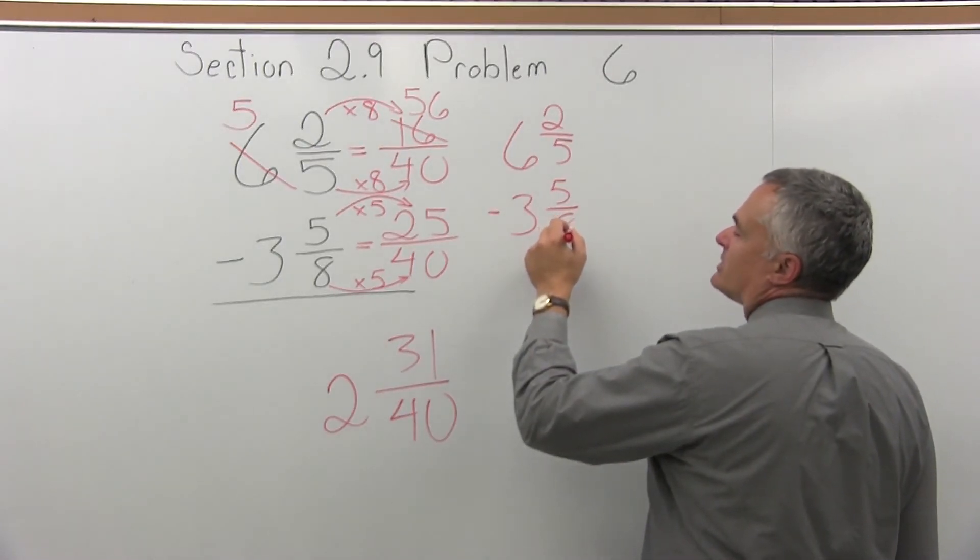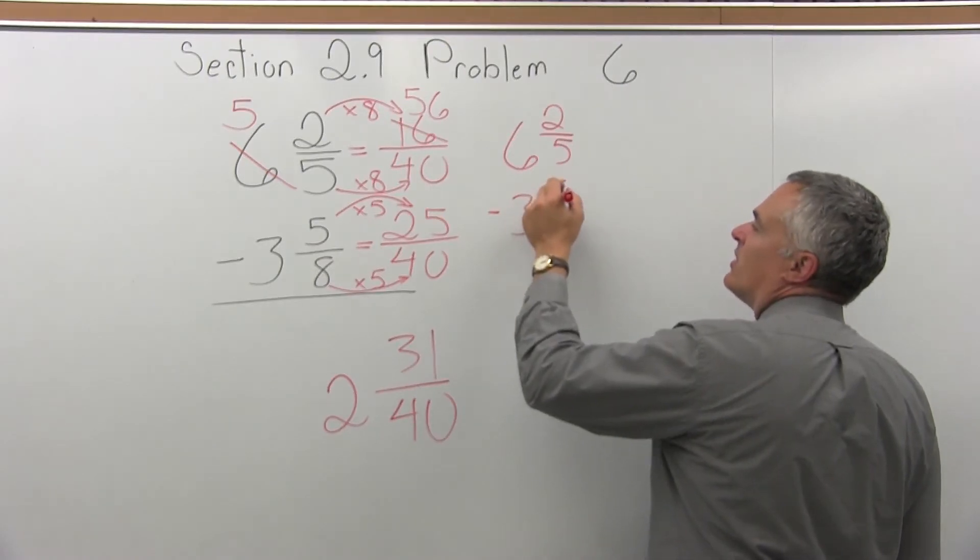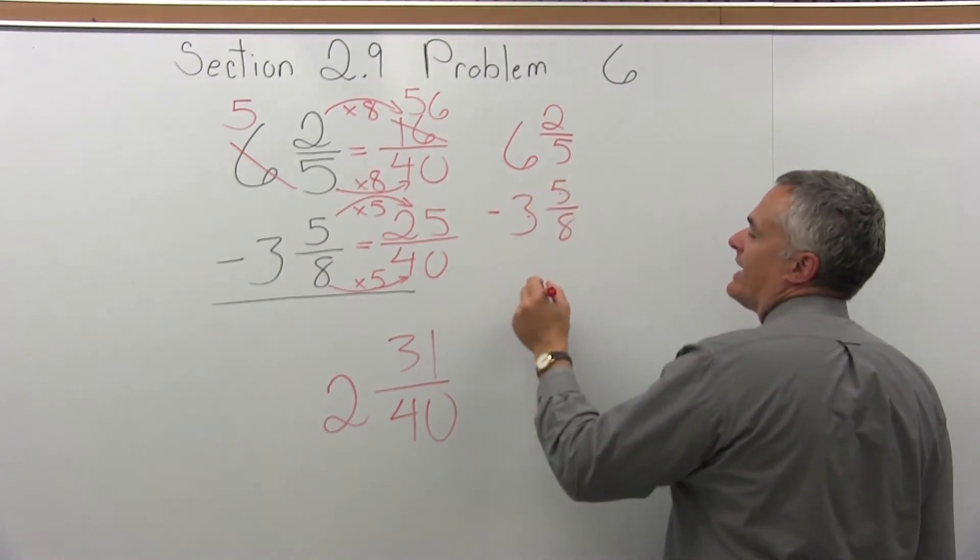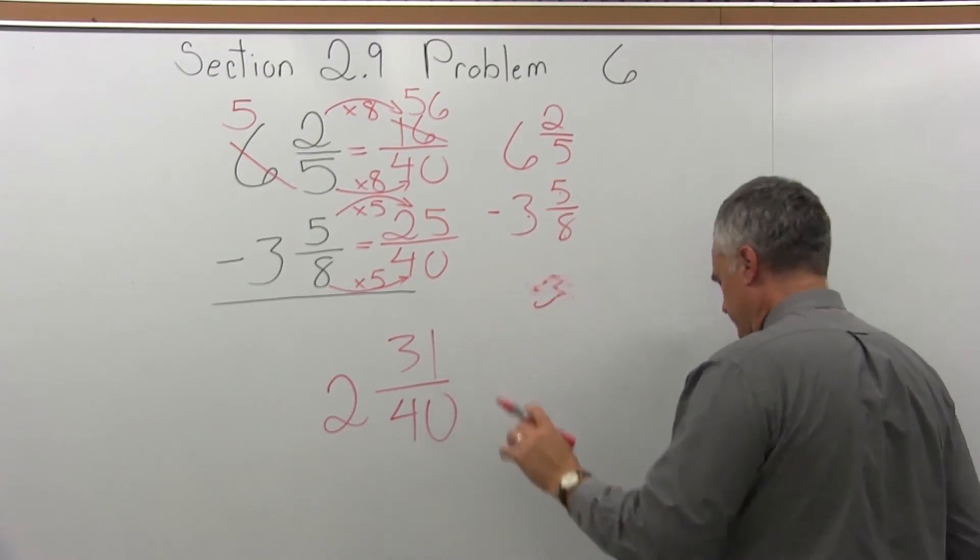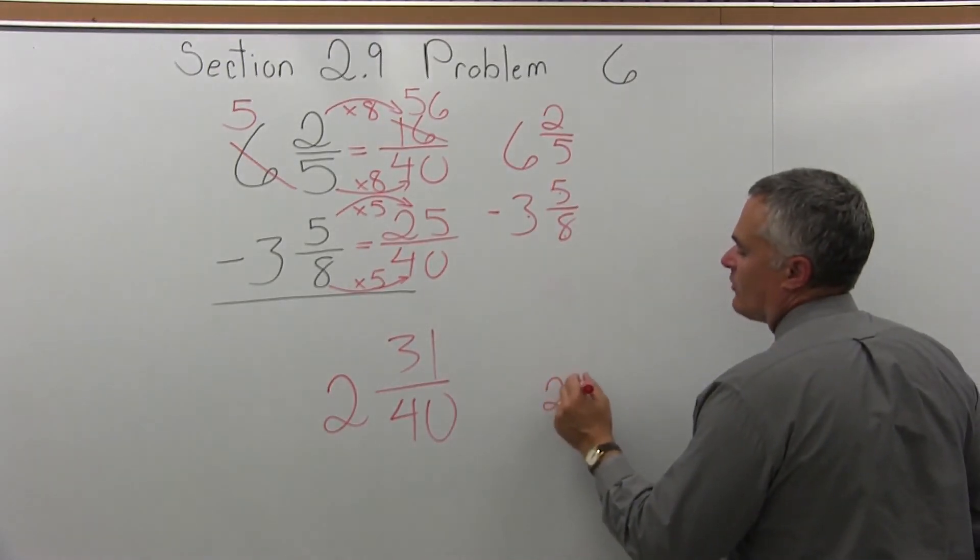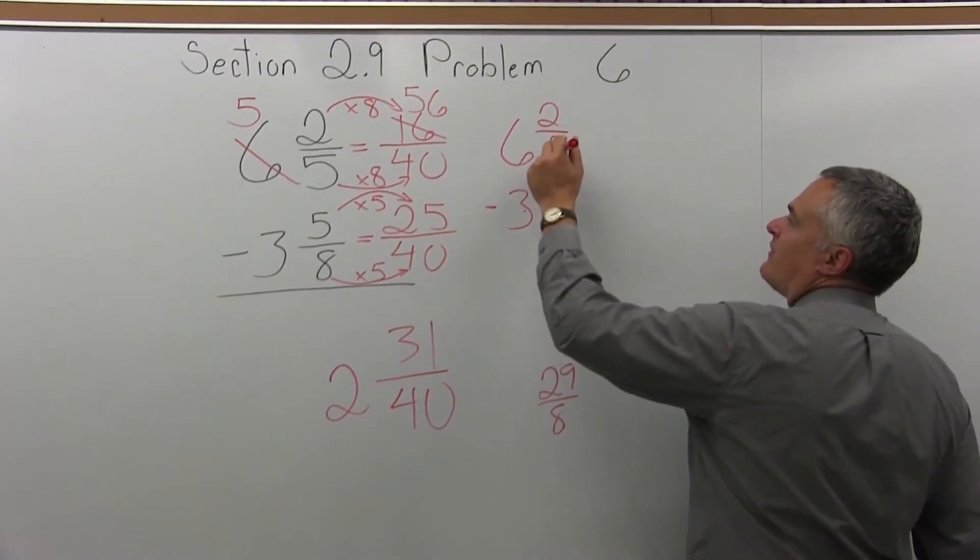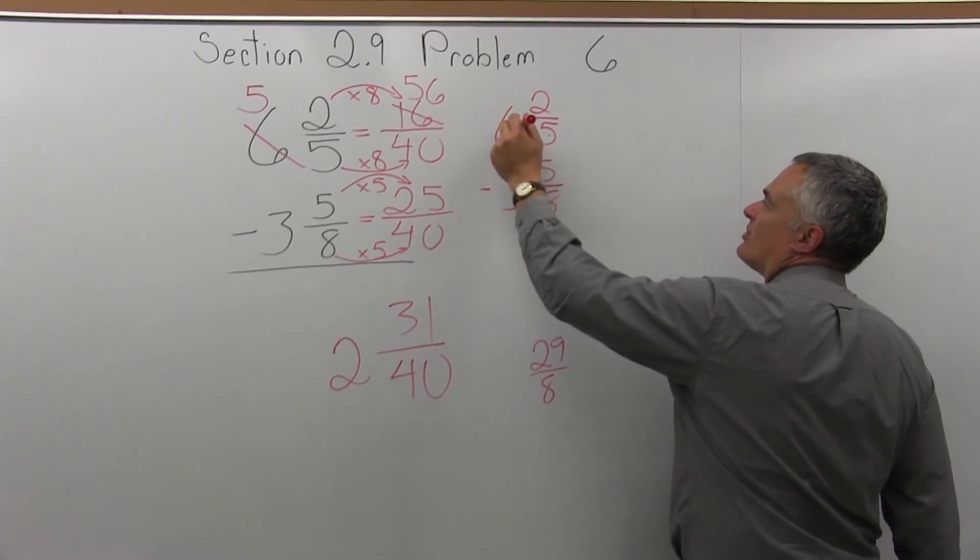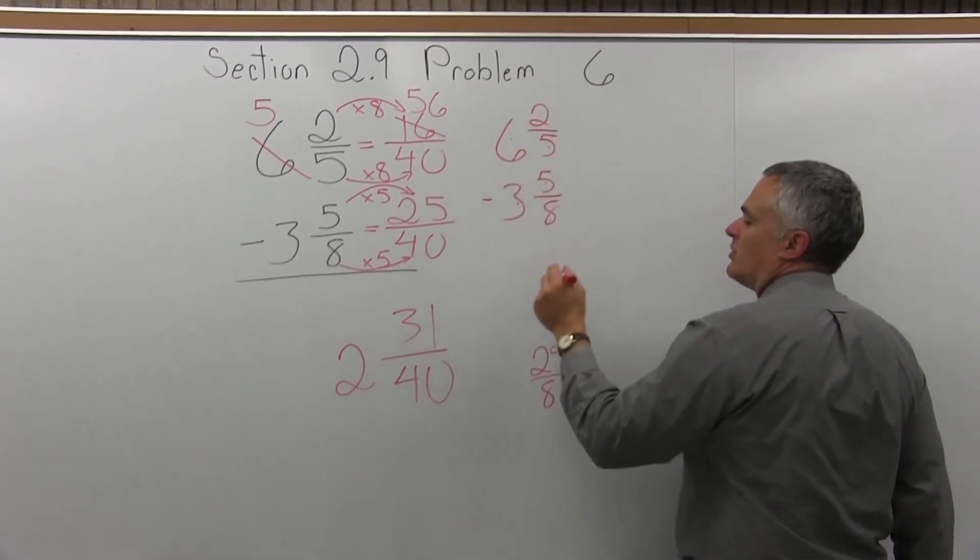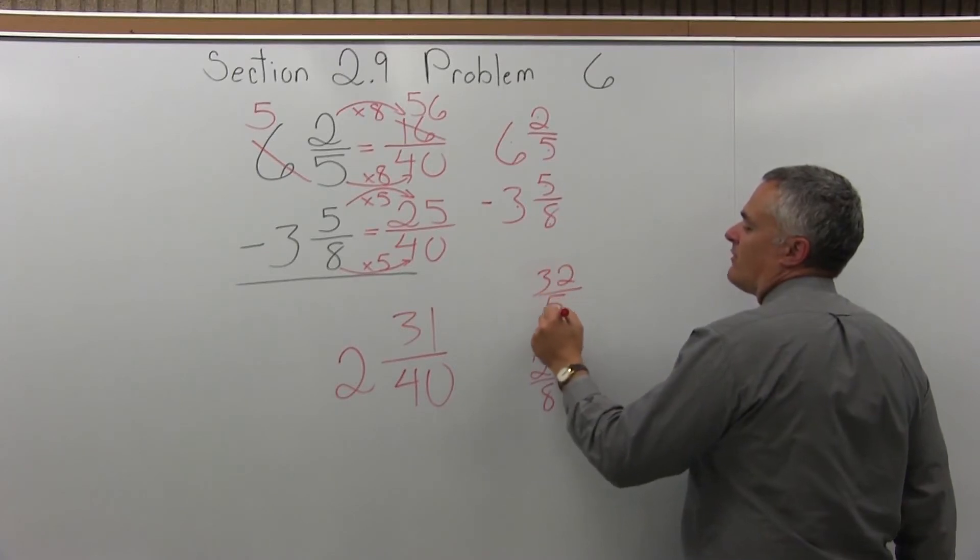Let's change this a little bit. Let's make them both improper fractions. 8 times 3 is 24, 24 plus 5 more is 29. So I will have, let me write that lower, 29 over 8 as the lower fraction. The upper fraction, 5 times 6 is 30, 30 plus 2 more is 32, so I have 32 over 5.